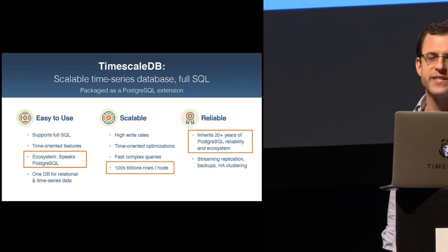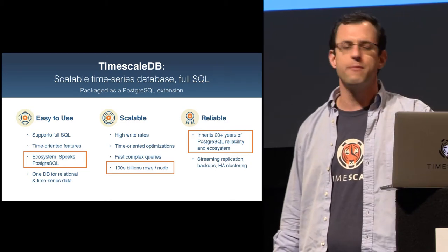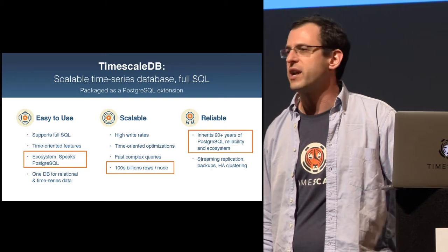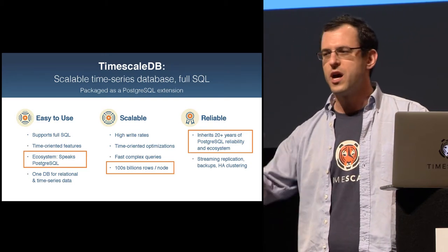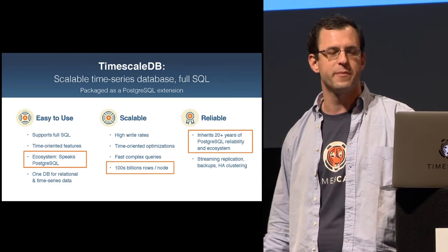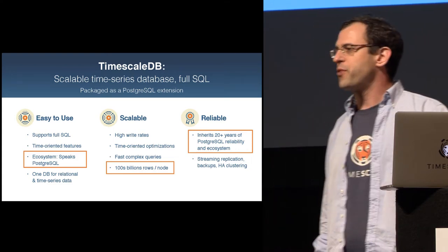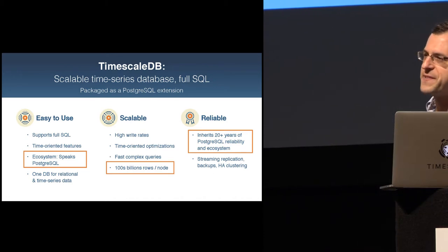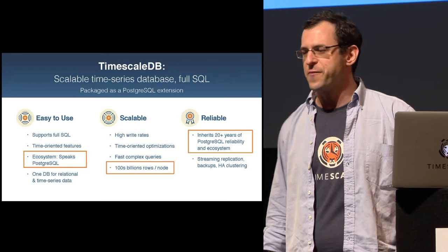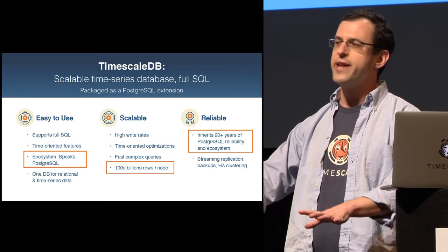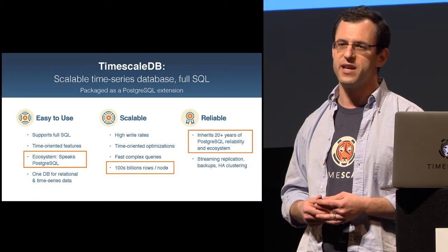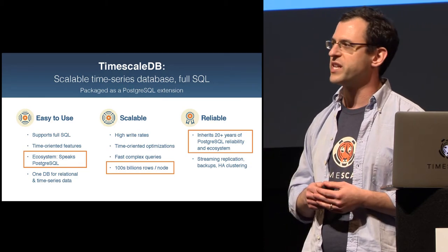This allows you to have one database that stores both your relational data and your time series data. The last interesting thing is we expose the abstraction of what looks like a single table. That means if you have any existing tool that could speak to Postgres, it will just work with TimescaleDB out of the box. The second thing is it supports high write rates and time-oriented optimizations. We have people running hundreds of billions of rows per node and maintaining that high insert performance.